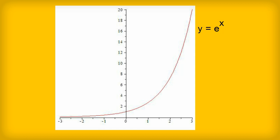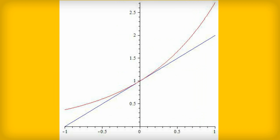Take the graph Y equals E to the power of X. The gradient or slope of the curve at any point is actually equal to the height of the graph at that point. At the Y-axis, the value of E to the power of X is 1, and sure enough the tangent to the curve at that point is also 1. This was actually featured in an episode of The Simpsons.